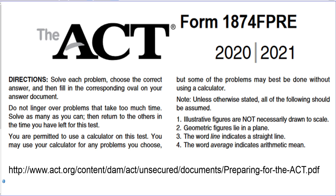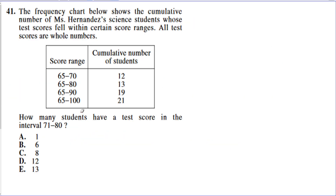Welcome to part five of the ACT practice test for 2020-2021, form 1874-FPRE. If you go to the link at the bottom of this page, which I've also linked in the description below, this is the official ACT preparing for the ACT guide, practice test number one. We're now in part five, starting at question 41, moving through 41 through 50, and wrapping up in the last video with 51 through 60. There are four prior videos covering questions one through 40, and a playlist is available on my page.